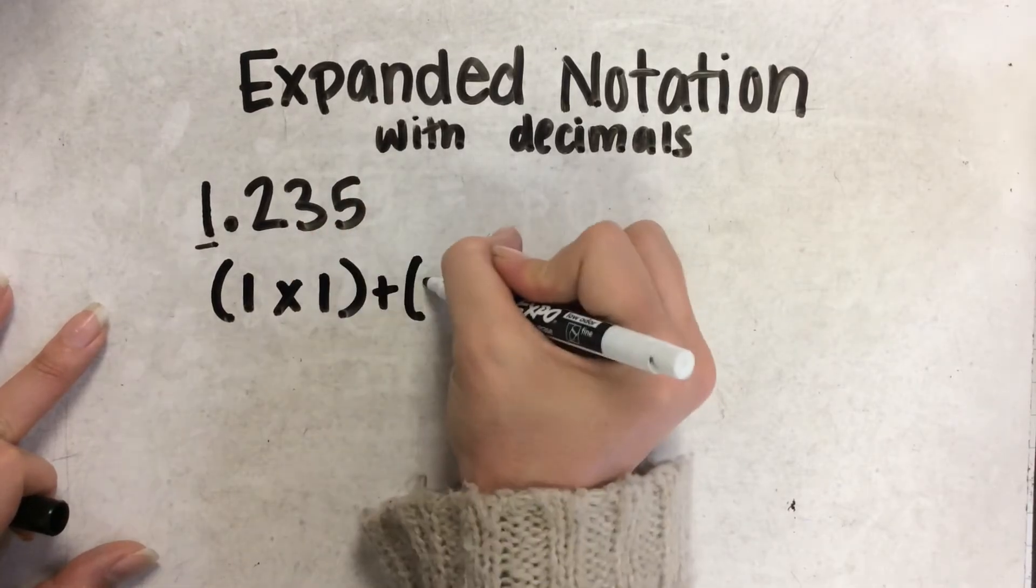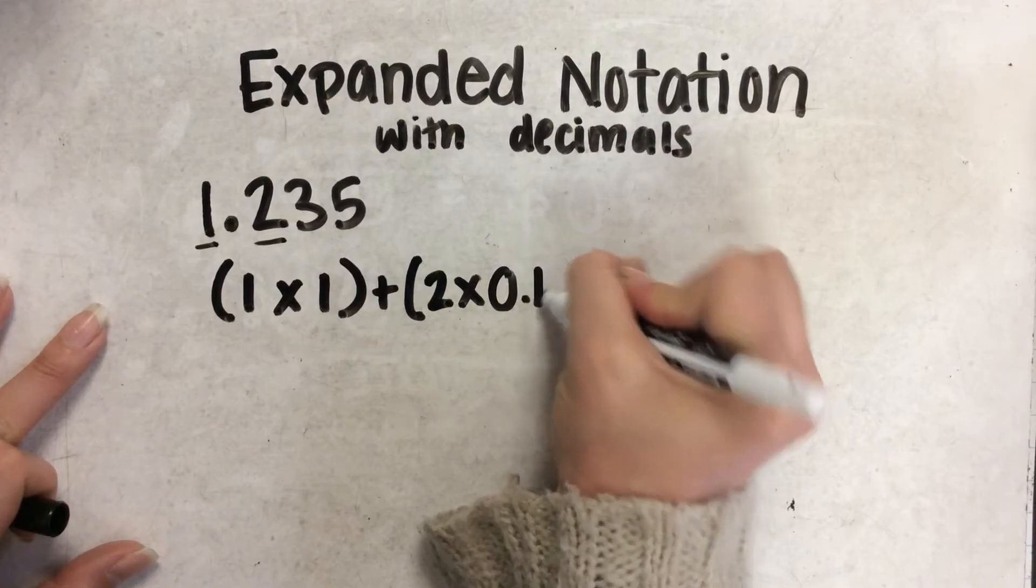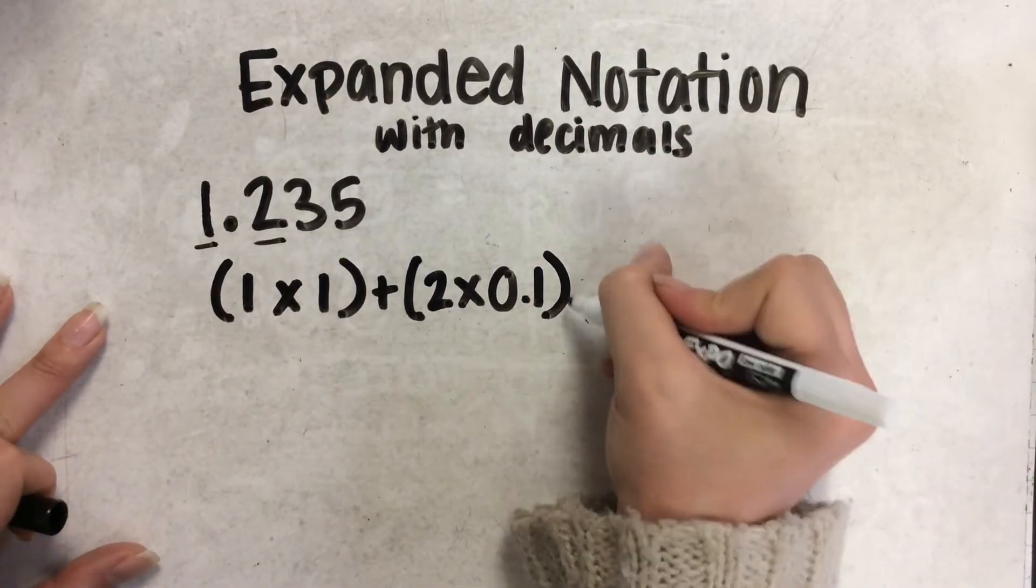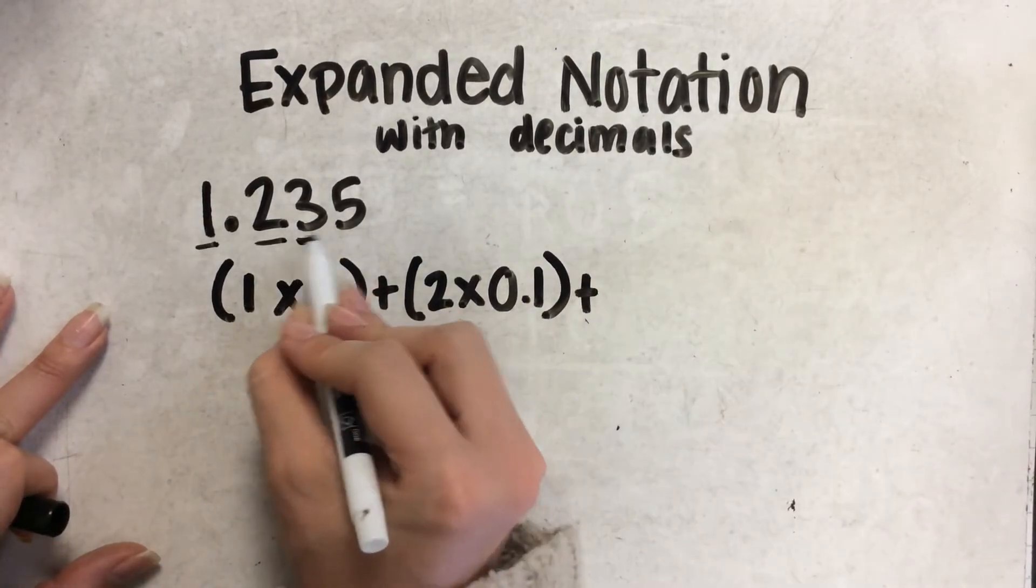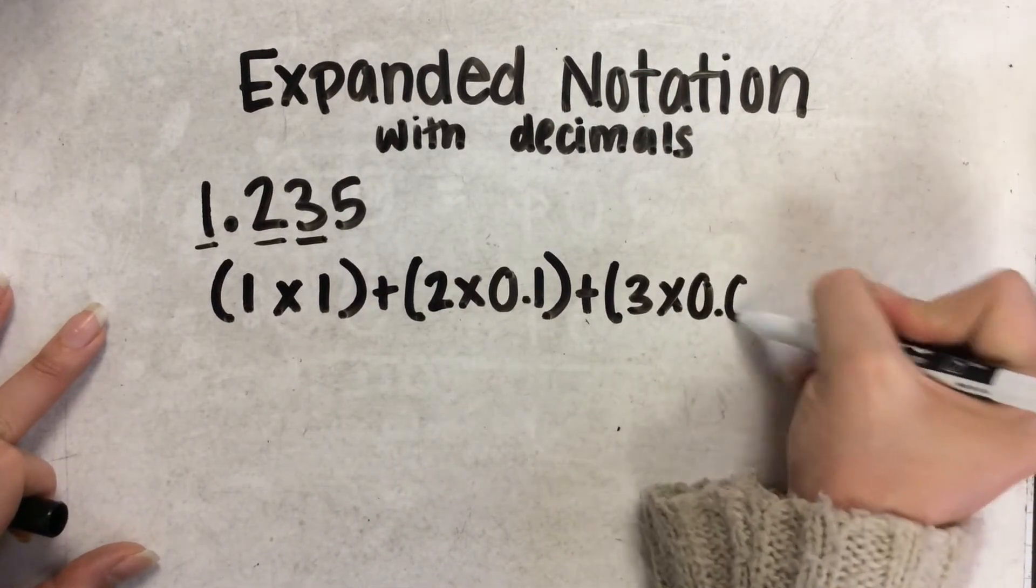Then, we add the next digit, 2 times, and we do 1 tenth. Then we're going to add the next place value, 3 times 1 hundredth.